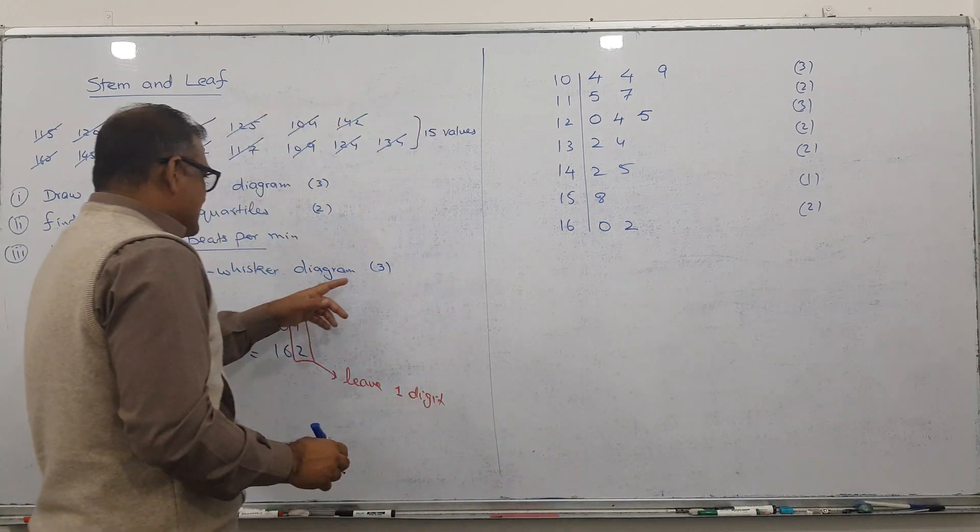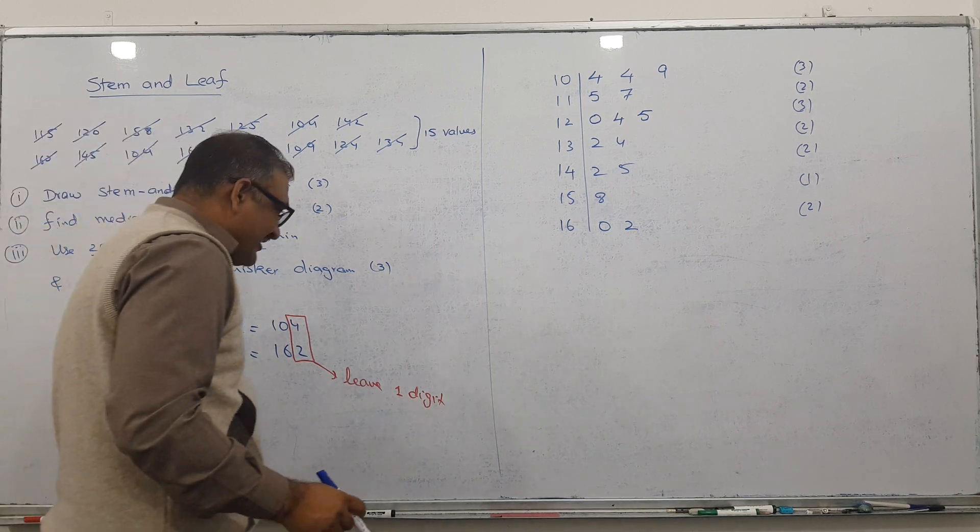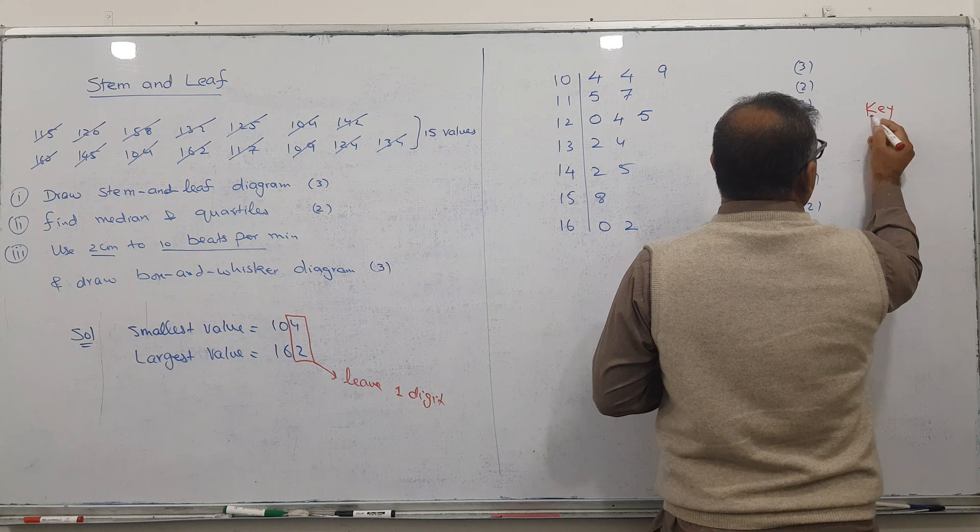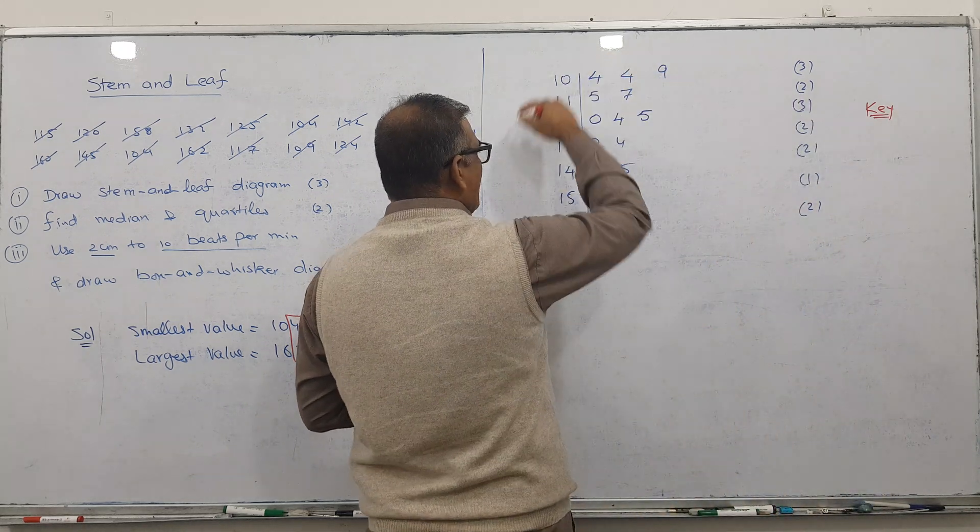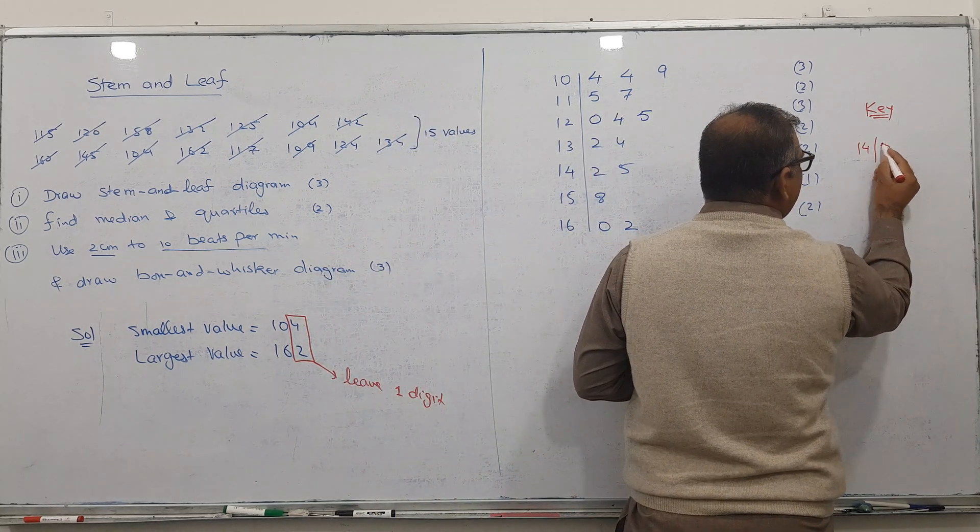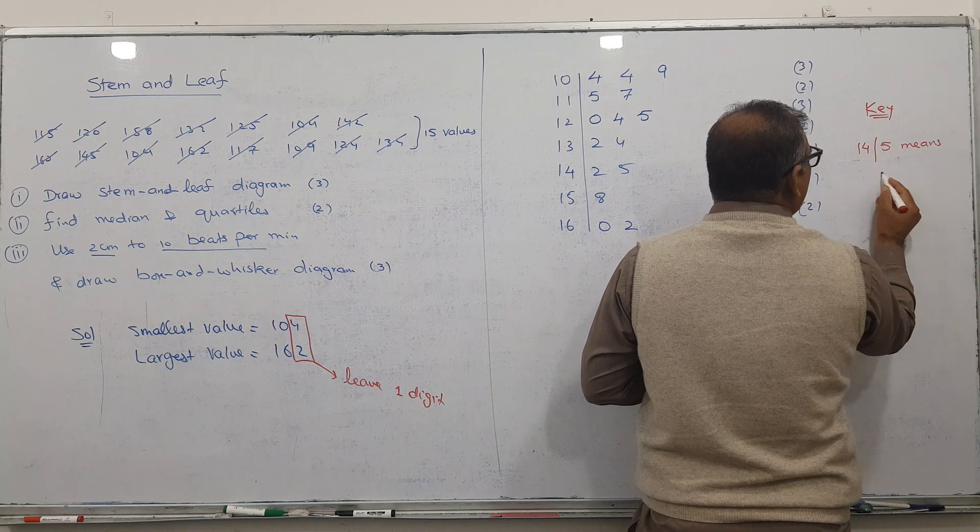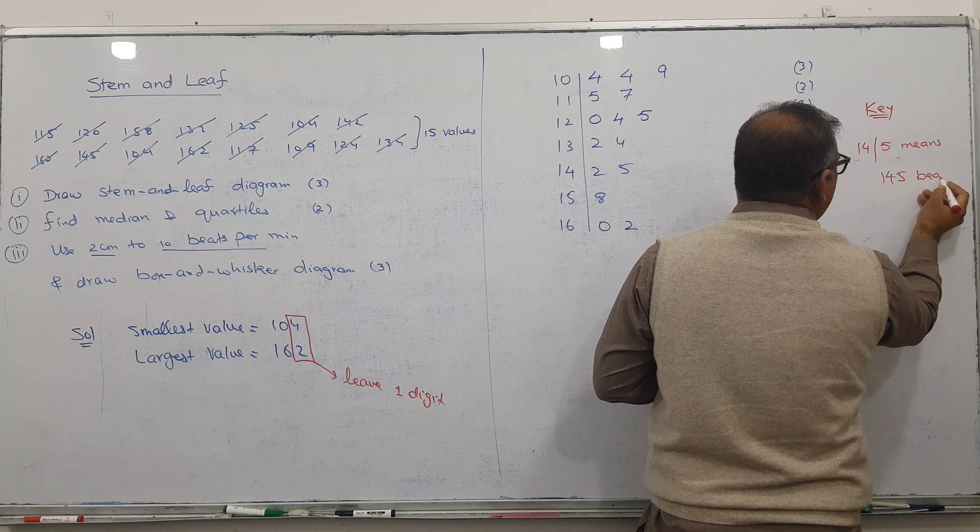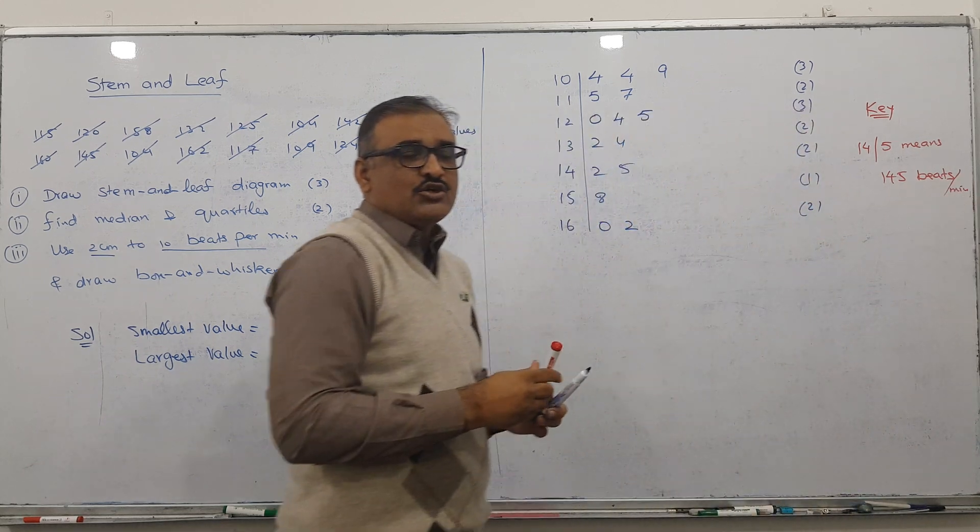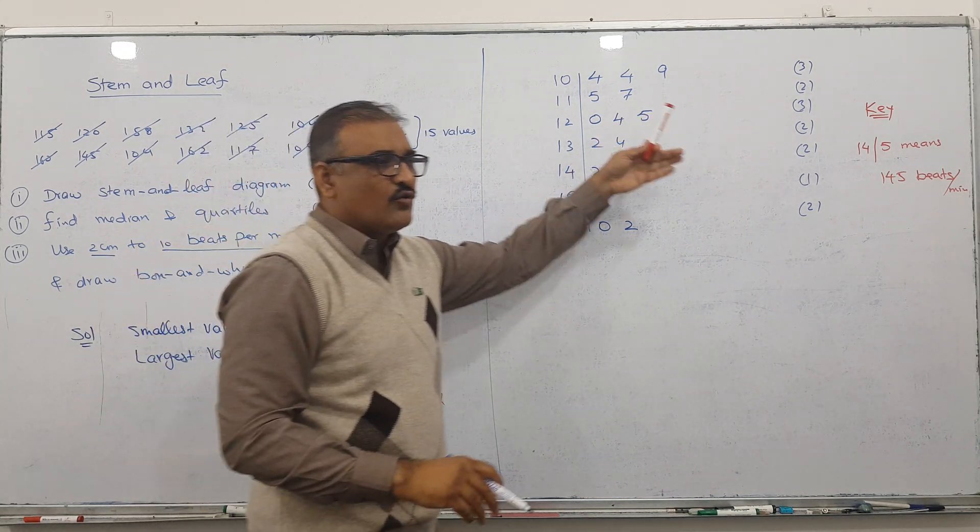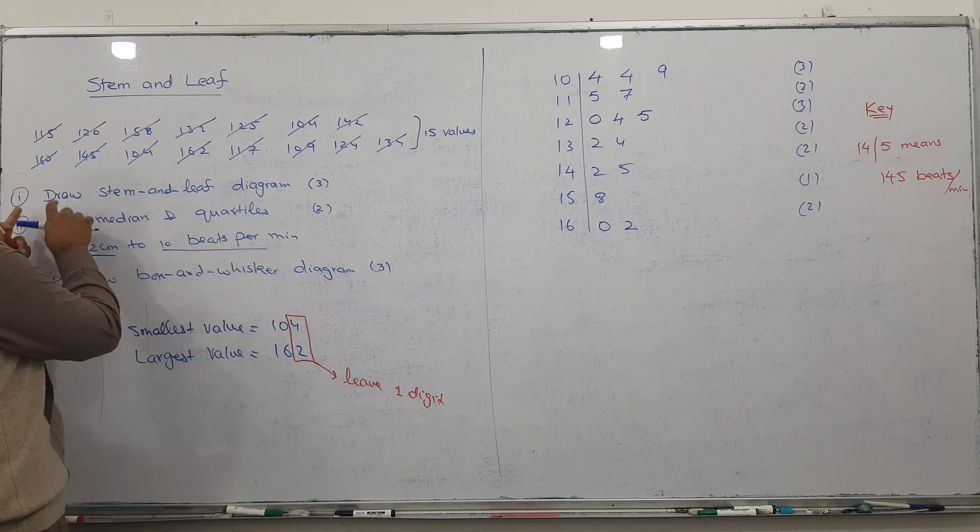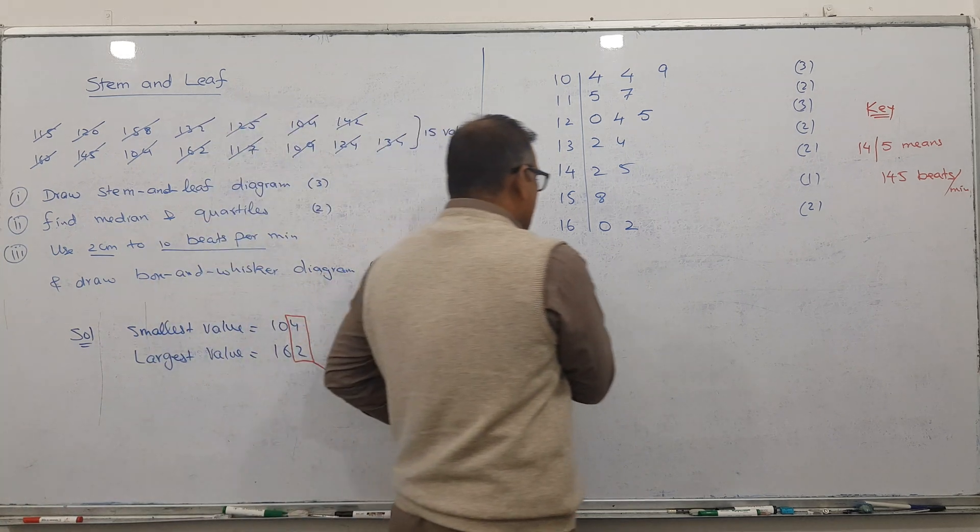Now, 3 marks? Two marks for this and one mark for writing the key. What is the key? You write here. How to write the key? You can take any one pattern number, for example 145. So 14 slash 5 means 145 beats per minute. You have to take any one sample, your wish, anyone. This is three marks. The first part is over.